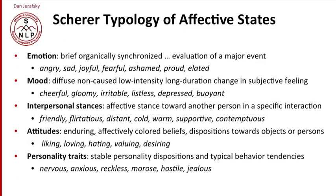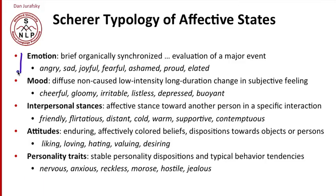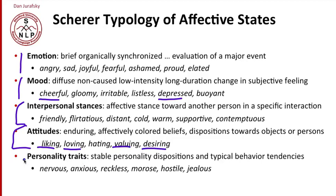The psychologist Klaus Scherer has shown that there are lots of different kinds of affective states. Sentiment is really just one of many. He talks about emotion — a brief kind of sentiment, like being angry or being sad. Mood — like being cheerful or being depressed. Interpersonal stance — how do I feel toward you? I feel friendly, I feel warm, I feel distant. Sentiment is a subtype of attitudes — my beliefs or dispositions toward somebody: do I like something, love it, desire it, value it? And there are very stable things like personality traits: am I an anxious person, a hostile person?